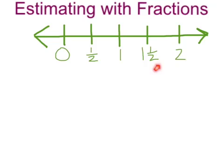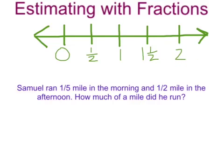We are going to be using this number line to help us with this process. Samuel ran 1/5 mile in the morning and 1 1/2 mile in the afternoon. How much of a mile did he run?